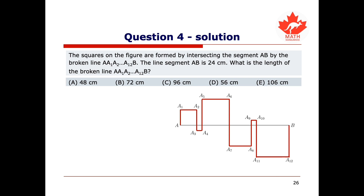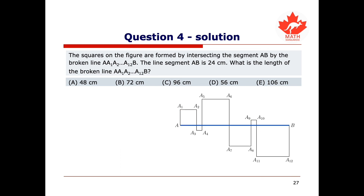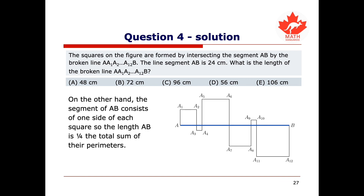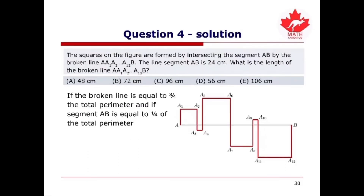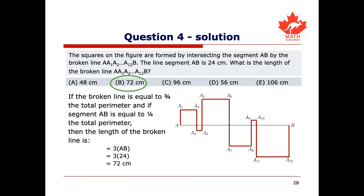The broken line AA1-A2-A12-B is marked in red in the figure. The broken line consists of 3 sides from each square, so its length is 3 quarters of the total sum of the perimeters. The segment AB consists of one side from each square, so AB equals 1 quarter of the total sum of the perimeters. Therefore, the broken line equals 3 times AB, which is 3 times 24, equal to 72 centimeters. This corresponds to answer choice B.